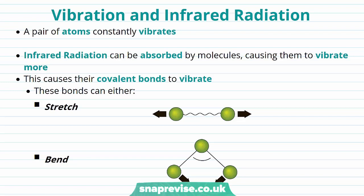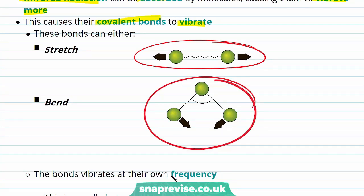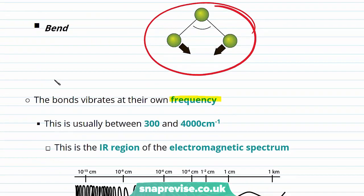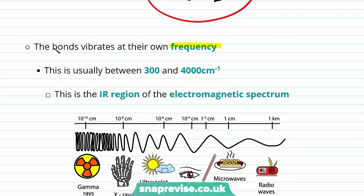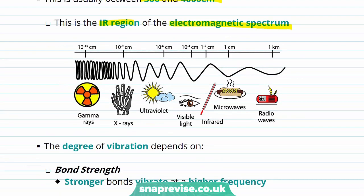So what's the relationship between vibration and infrared radiation? A pair of atoms that are bonded together constantly vibrate, and infrared radiation can be absorbed by these molecules, causing them to vibrate more. This infrared radiation causes their covalent bonds to vibrate, and these bonds can either stretch or bend. The bonds vibrate at their own frequency, usually between 300 and 4000 reciprocal centimetres — this is in the IR region of the electromagnetic spectrum.